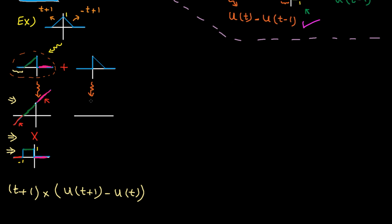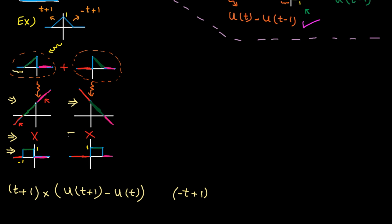Now let's look at the positive side — it's basically the same story: a line multiplied by a window. Below 0, the window is 0, so the product is 0. Between 0 and 1, the window is 1, so 1 multiplied by the line gives us the line back. Above 1, the window is 0, so the product is again 0. So this function is basically minus t plus 1 multiplied by the window, which is exactly similar to the previous example: u of t minus u of t minus 1.